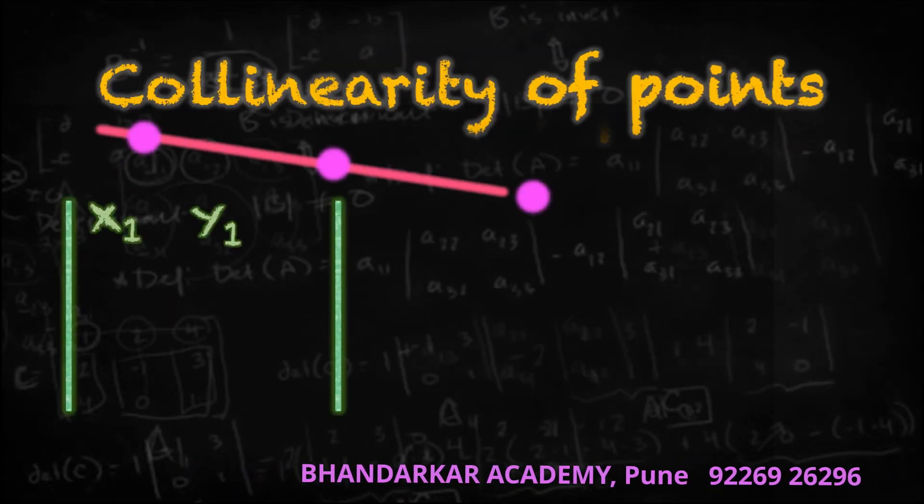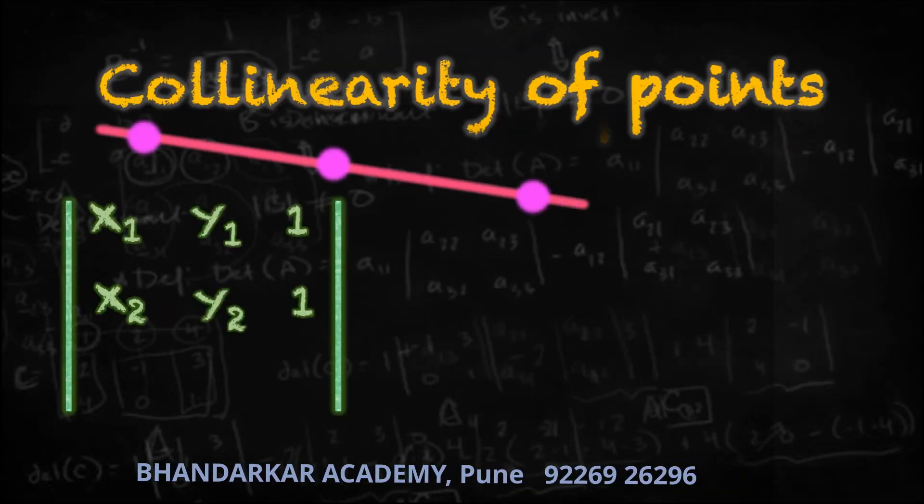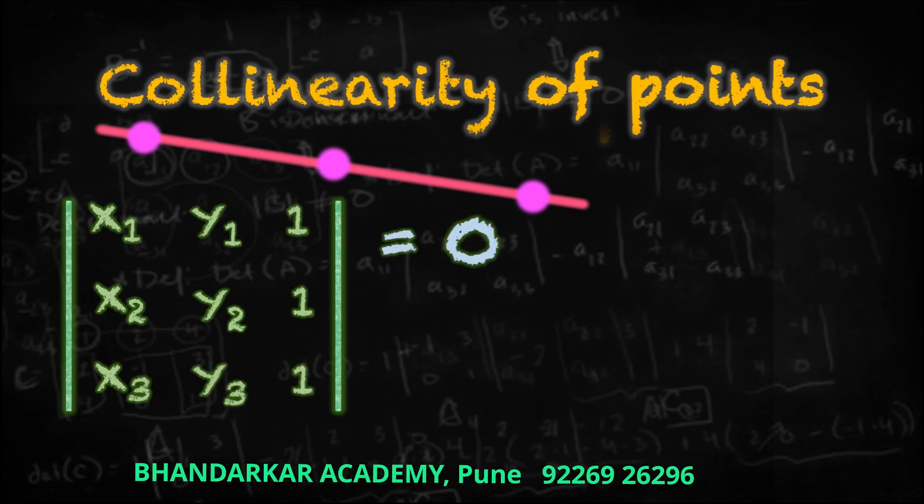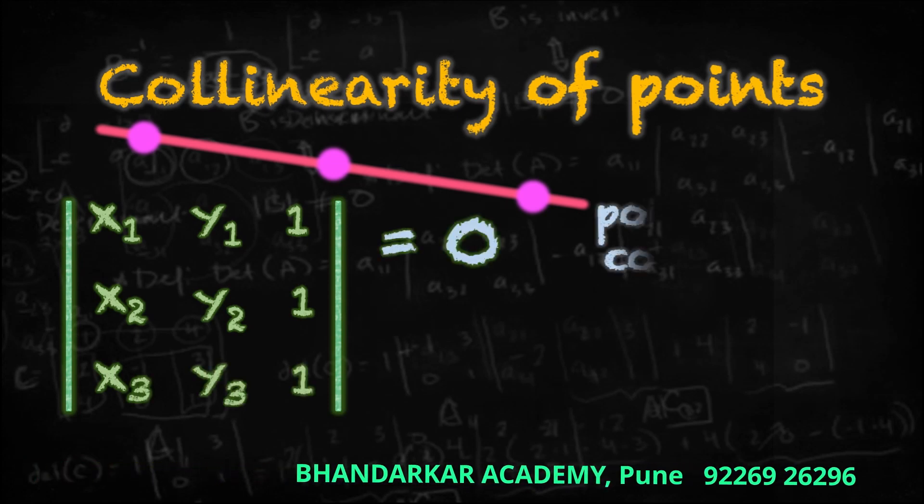Collinearity of points: determinant of X1, Y1, 1; X2, Y2, 1; and X3, Y3, 1 is equal to 0. Answer agar 0 hai toh points are collinear. Answer agar 0 nahi toh points are non-collinear.